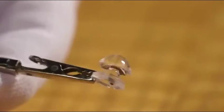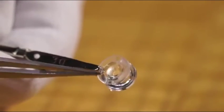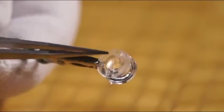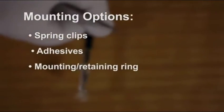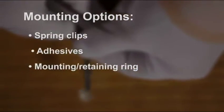These examples of one-piece compound lenses have grooves on the mounting rim for spring clip attachment to the LED board, but the lens also could be mounted with adhesives or held in place with a mounting or retaining ring.